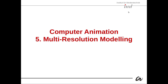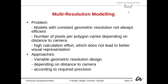Hi everybody, welcome back to our lecture on computer animation, this time about multi-resolution modeling. The problem is that models with constant geometric resolutions are not always efficient, because the number of pixels per polygon varies depending on the distance to our virtual camera. This means we have high computation effort that does not lead to better visual representation, because we compute all those nodes and polygons even though they are not even visible.